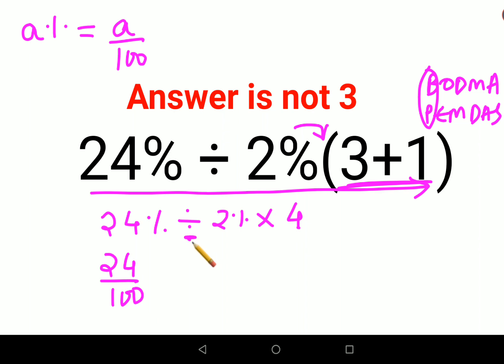Now this division sign can be changed into another sign by following the rule of KCF. Means you keep the first fraction as it is. And then C stands for changing the division sign to multiplication. And F stands for flipping.